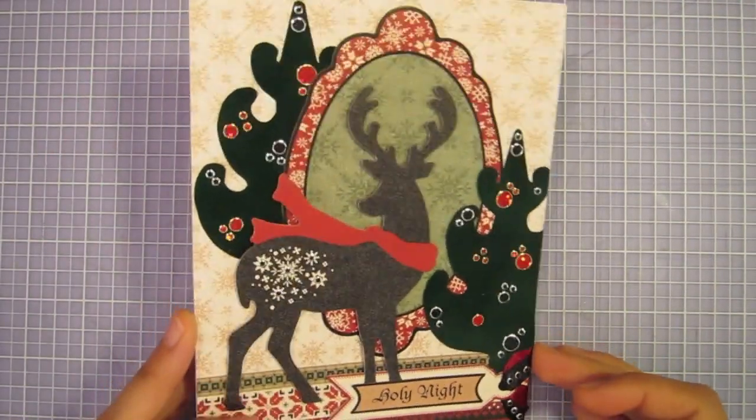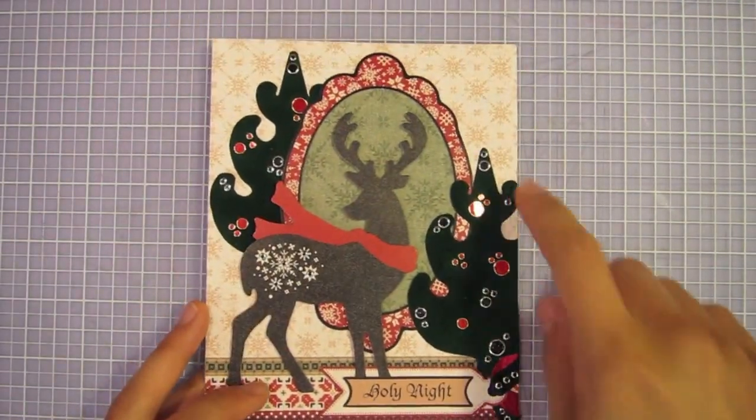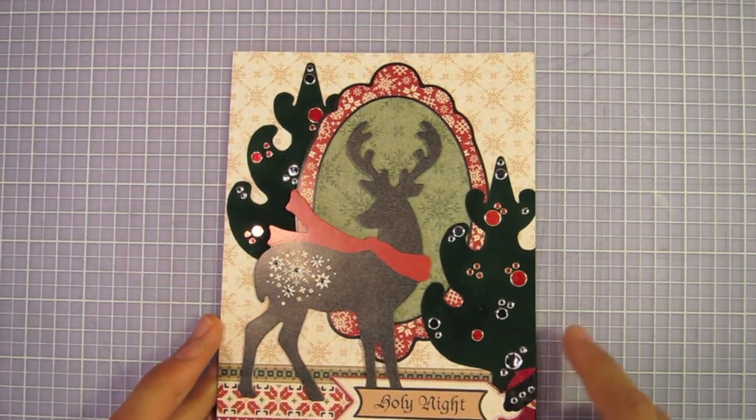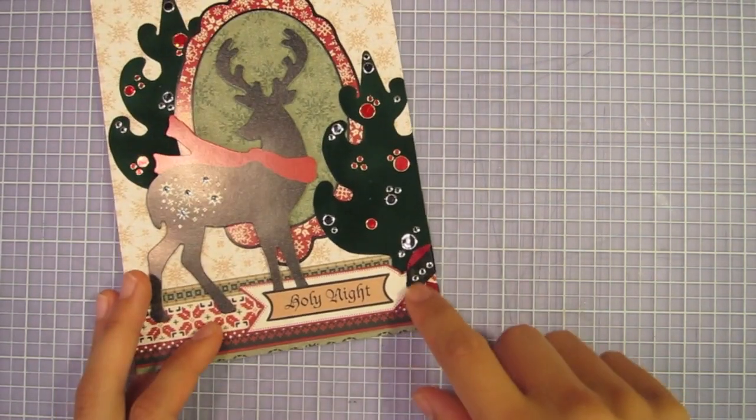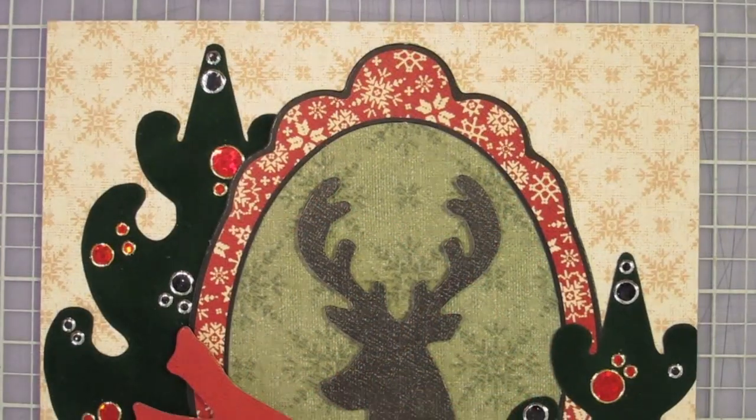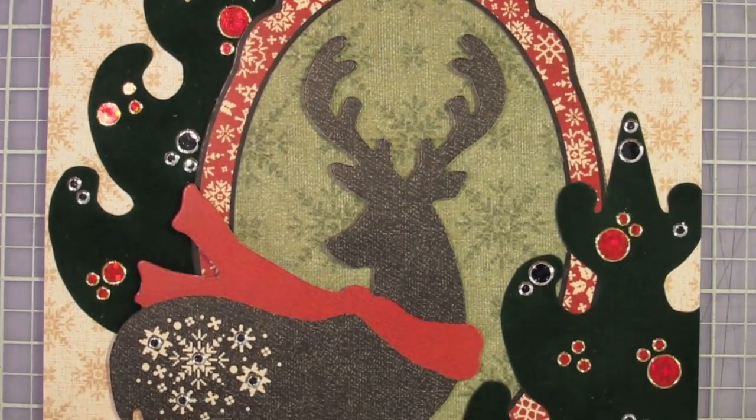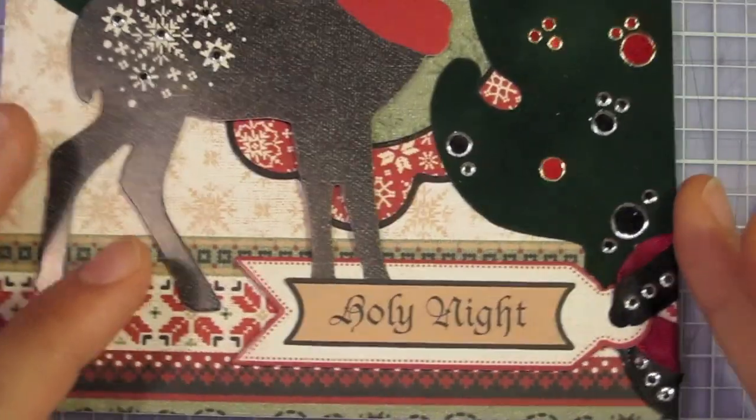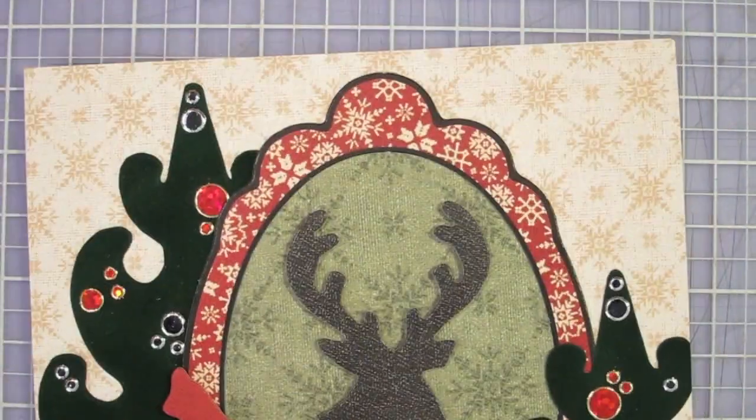So here is the result. I added some jewel dazzles on the trees and also on this little design on the reindeer and also on the ribbon. So let me give you a close up of that. Gives it a little shine and shimmer. Now for the inside.